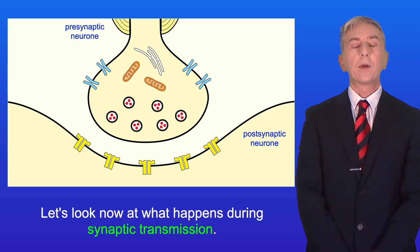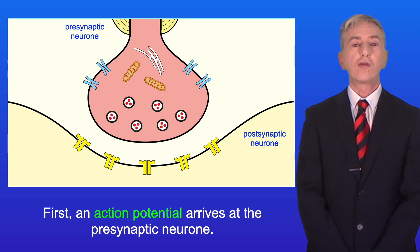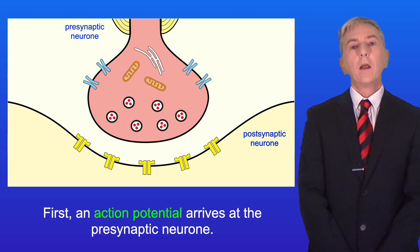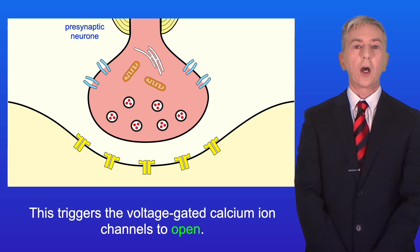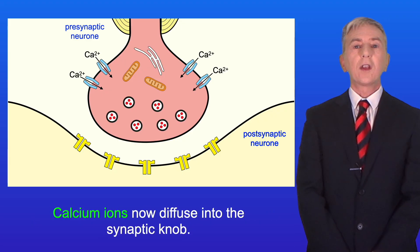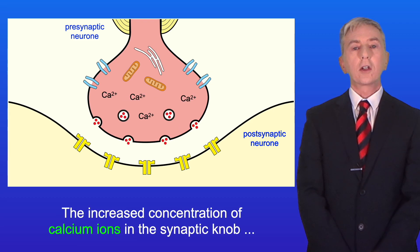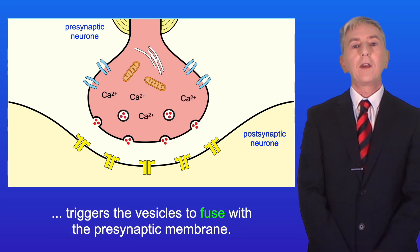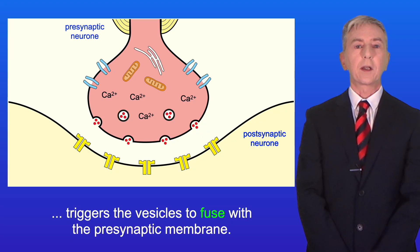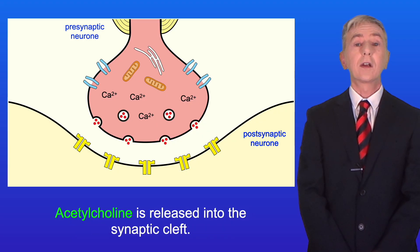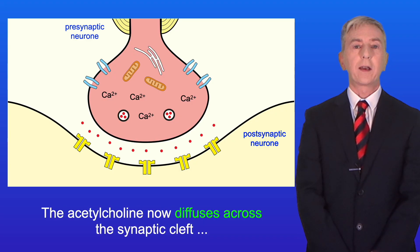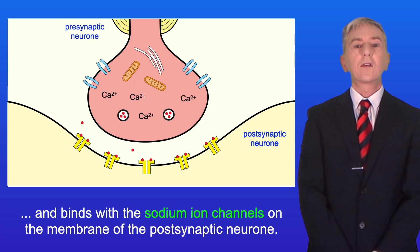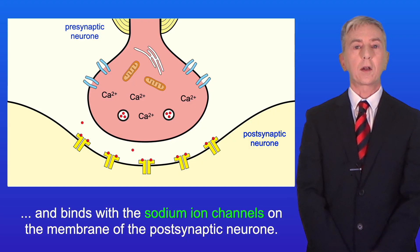Let's look at what happens during synaptic transmission. First, an action potential arrives at the presynaptic neuron. This triggers the voltage-gated calcium ion channels to open, and calcium ions diffuse into the synaptic knob. The increased concentration of calcium ions triggers the vesicles to fuse with the presynaptic membrane, and acetylcholine is released into the synaptic cleft. The acetylcholine then diffuses across the synaptic cleft and binds with the sodium ion channels on the membrane of the post-synaptic neuron.